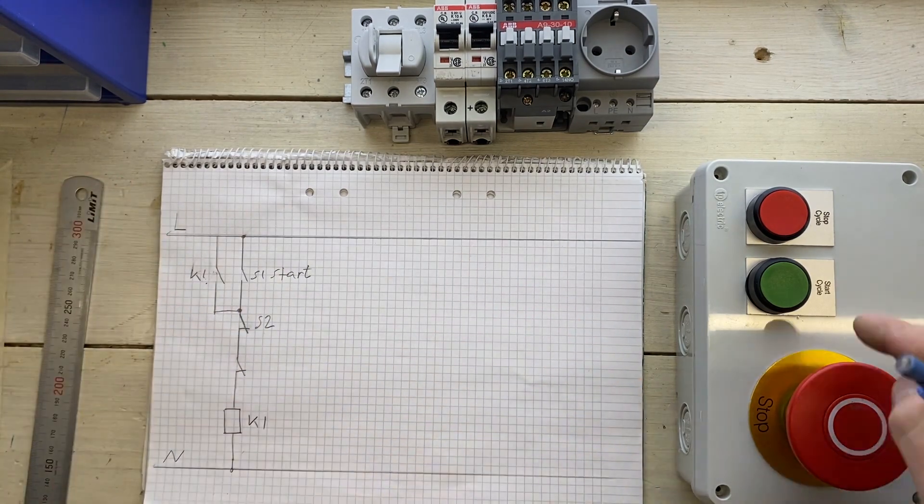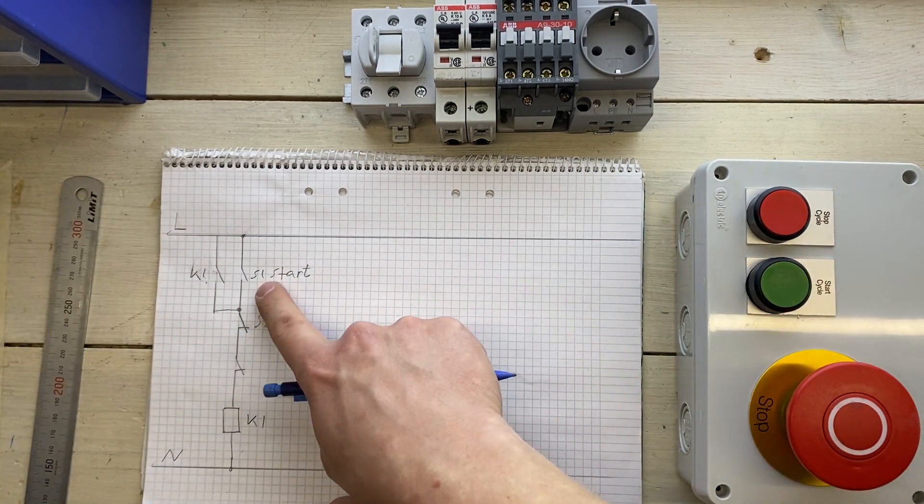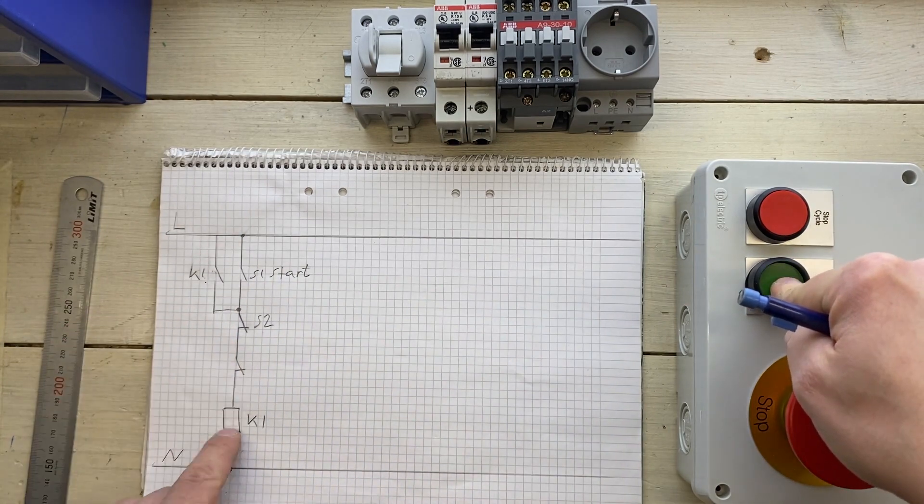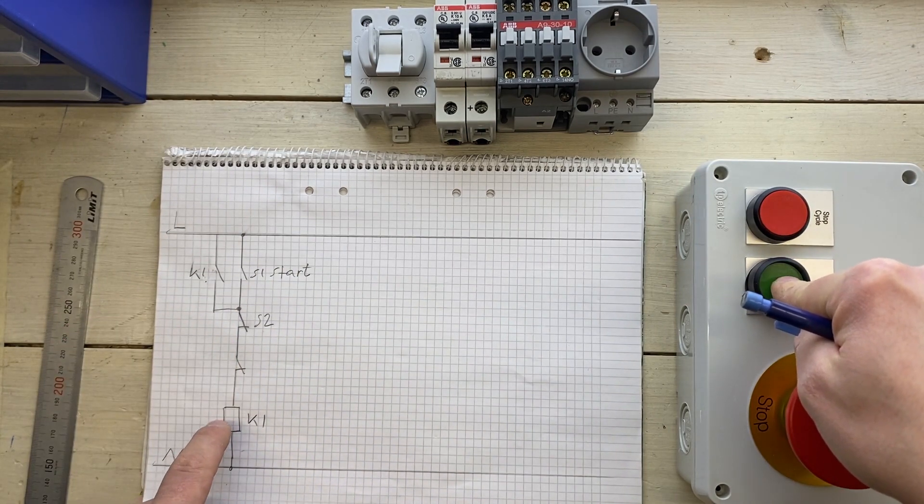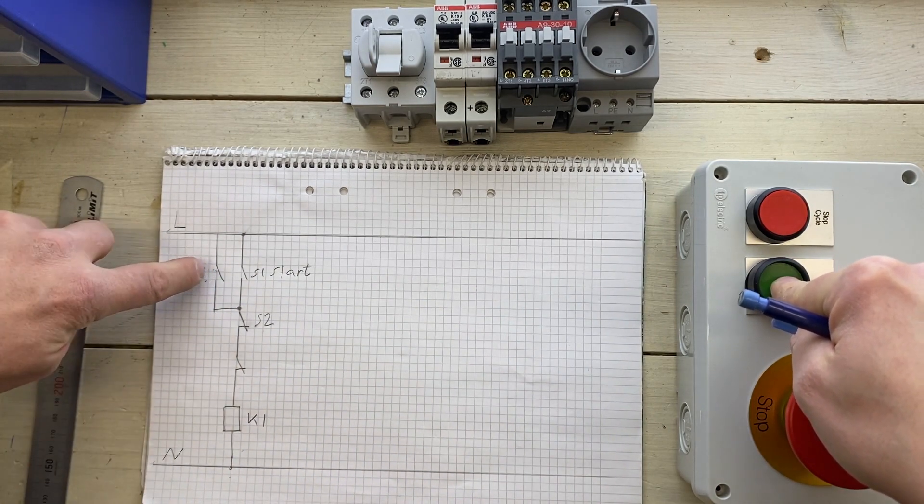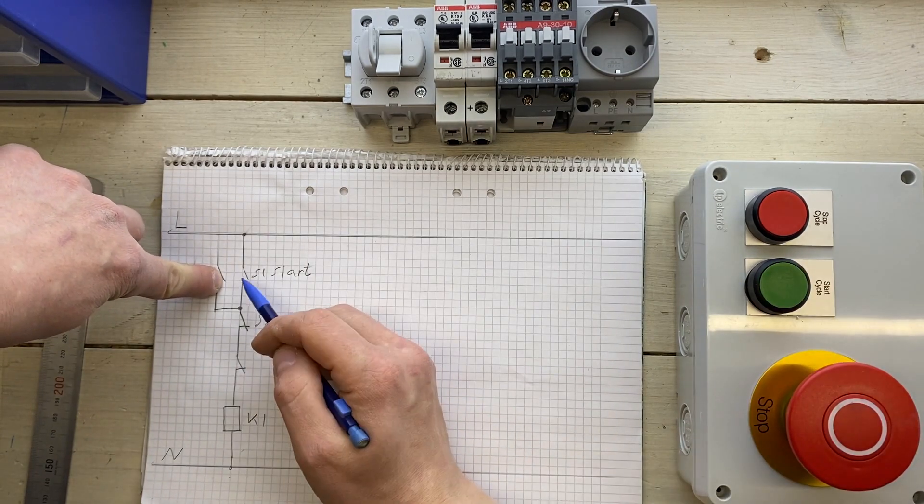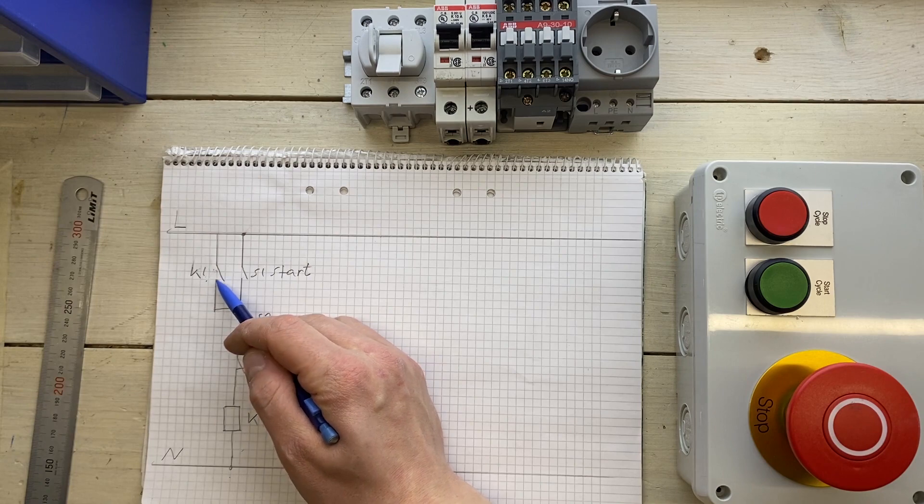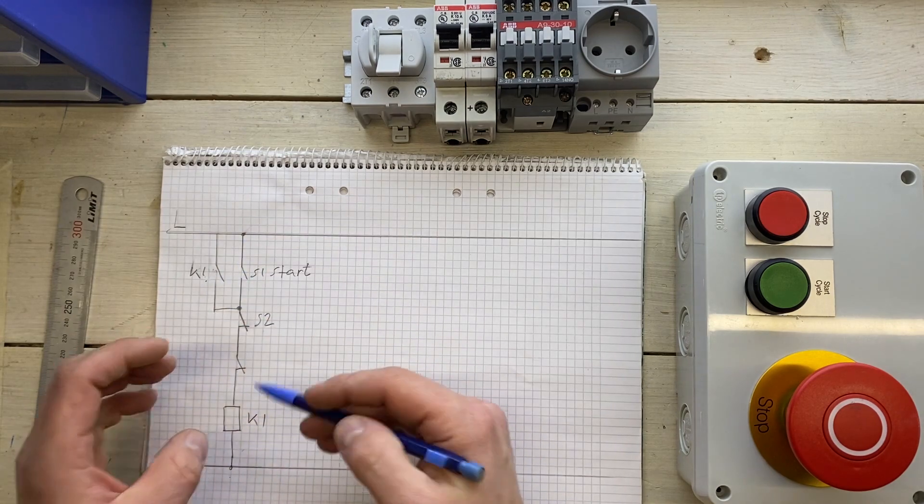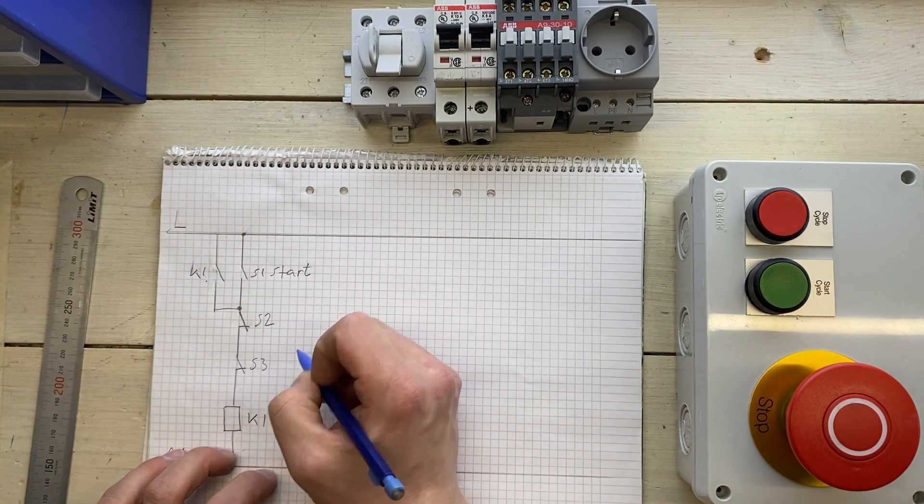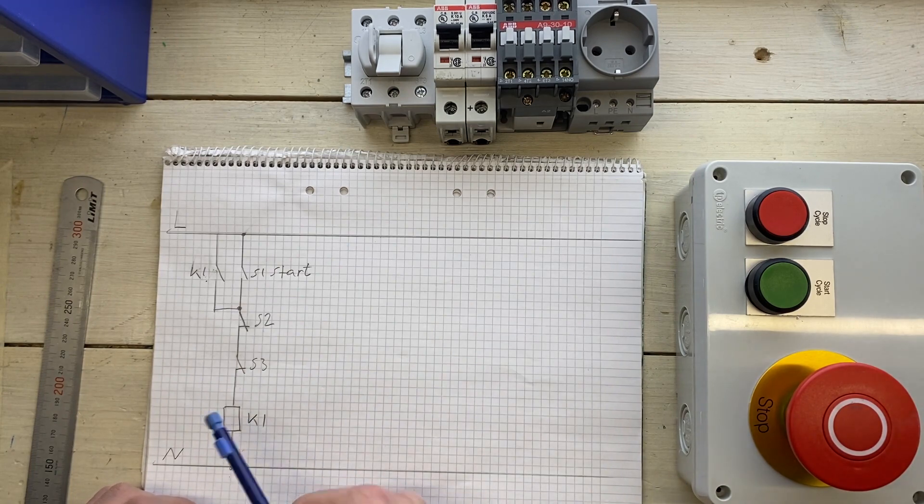So what will happen now when we push the start button? First off, start button will close. We will energize the coil. When the coil is energized, that one is closed. Which means that if we release the button, S1 opens again, but K1 is still closed. So now the relay is holding itself.